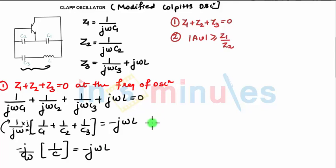So minus j upon omega, instead of the entire capacitors you can write a single capacitor. The outcome is we can say 1 upon C1 plus 1 upon C2 plus 1 upon C3 equals 1 upon C. This has been done over here.